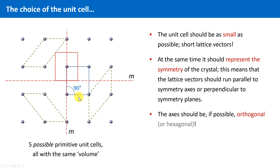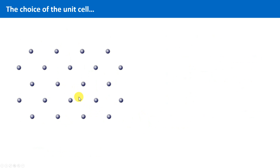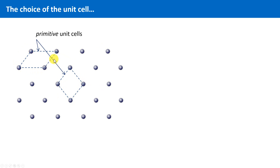Let's switch to another case — another lattice point pattern. What kind of unit cells can you choose here? There are a few possibilities to choose primitive unit cells: this one over here, or that one. But as you can see, whatever primitive unit cell you choose, they are all skew — the angles are not 90 or 120 degrees. But there is the rule that the lattice vectors should be, if possible, orthogonal. Are you able to find a unit cell which is in accordance with this rule?